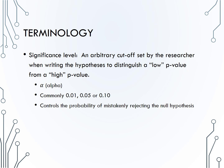Significance level is an arbitrary cutoff set by the researcher when writing the hypotheses that will distinguish between a low p-value and a high p-value. We use the notation alpha, the Greek letter for A, to denote our significance level, and the most commonly used significance levels are .01, .05, or .10 — in other words, 1, 5, or 10%. Your significance level, by definition, is controlling the probability of mistakenly rejecting the null hypothesis.